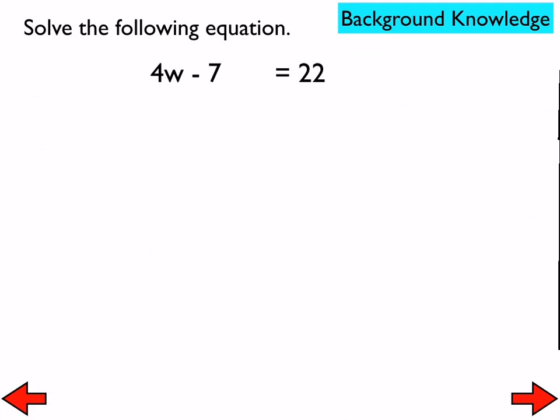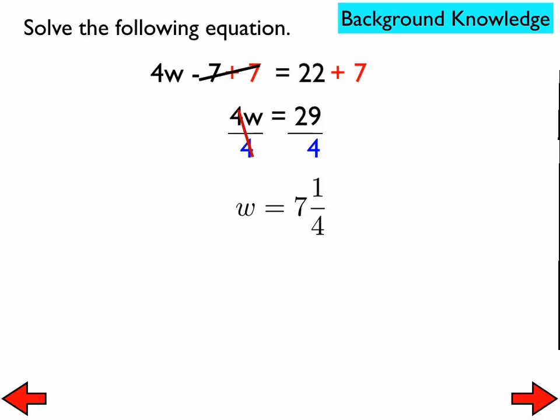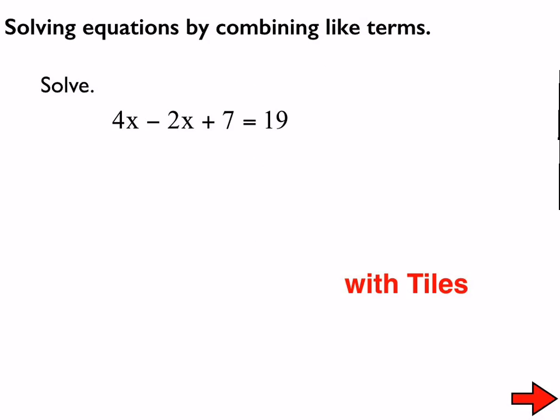We've also talked about how to solve two-step equations like this, where we would use the addition property of equality — we thought of this as the inverse of subtracting seven, then we divide both sides by four. We have done a few where our solutions did not come out to be an integer, and that's okay. We just write our answer as a mixed number.